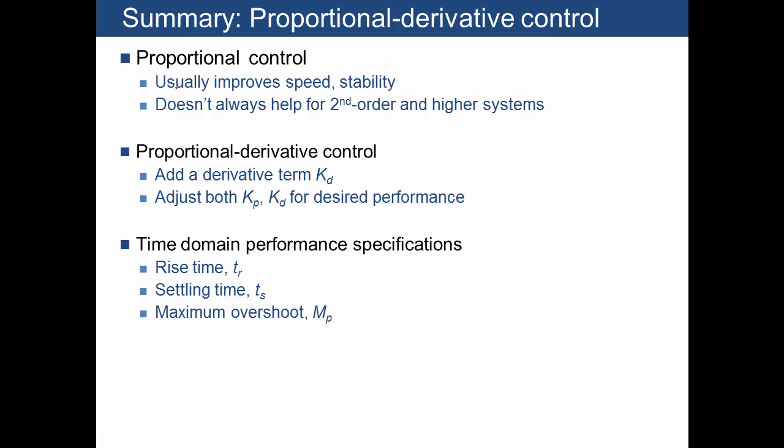Here's a review of what we talked about. We said that proportional control usually improves speed and stability, but it's not always going to be enough for second- and higher-order systems. We also showed that a derivative term can improve the performance, and then you actually have two numbers that you can change, kp and kd, to yield the desired performance, including some desired damping.